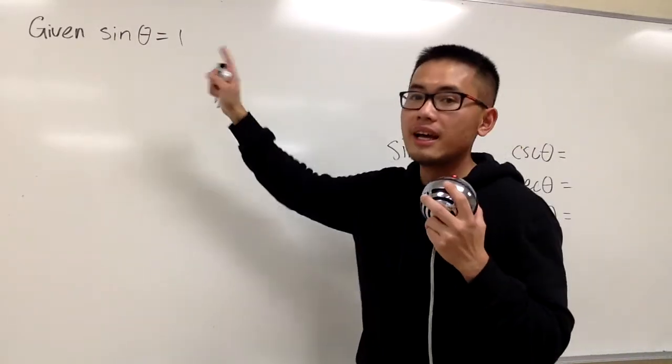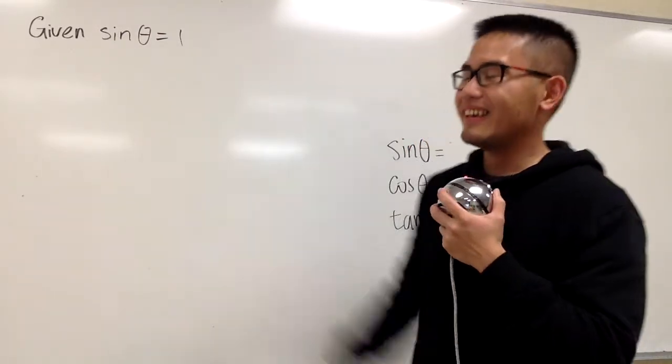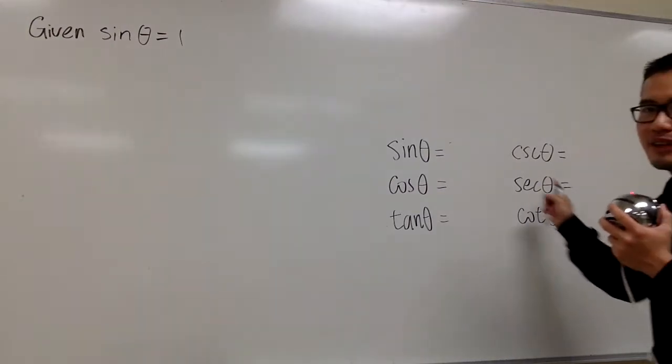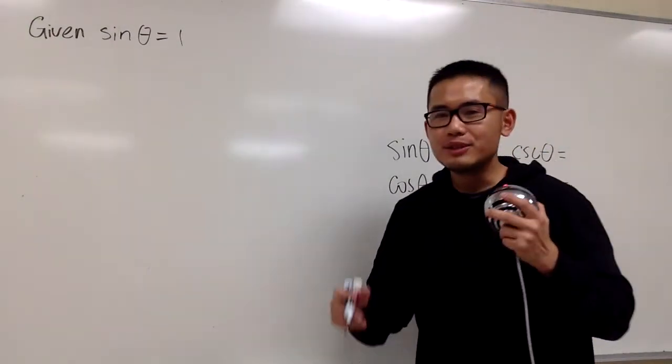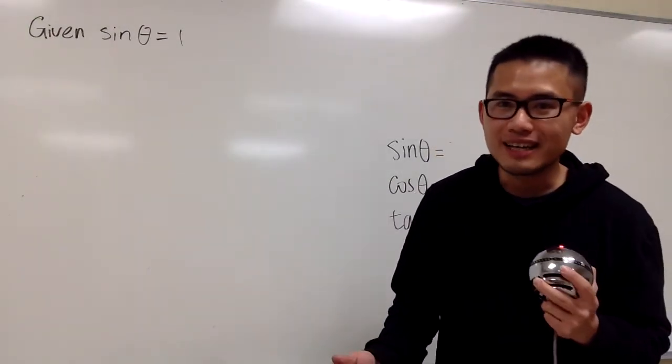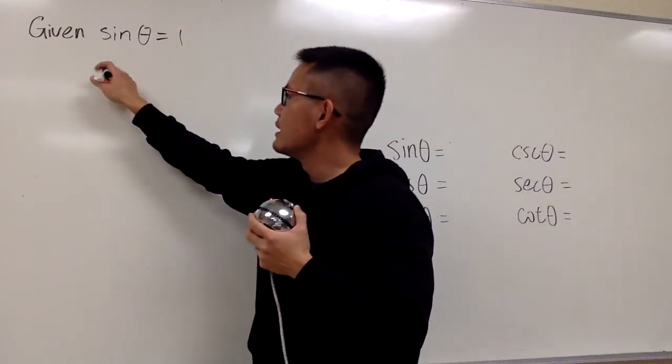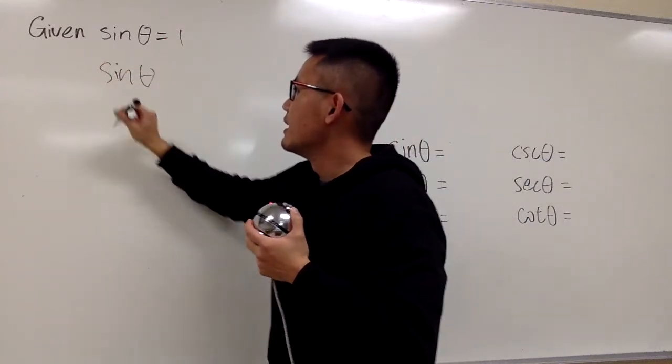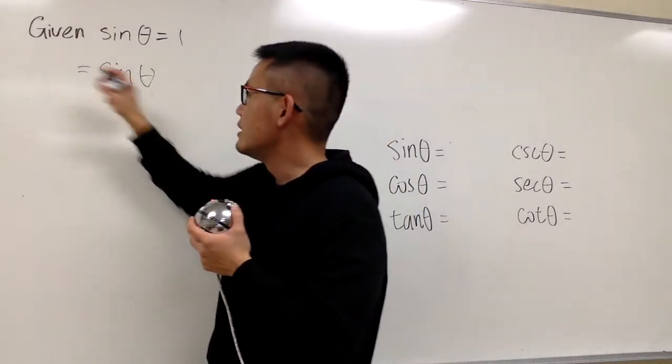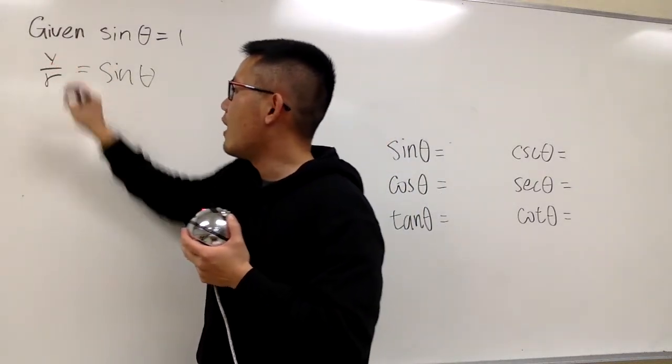In this case, we're only given that sine theta is equal to 1, and we'll have to figure out the rest of these. Just to illustrate the idea I've been showing you guys, let's look at this. We know sine theta on the x and y plane, the definition for this is y over r.